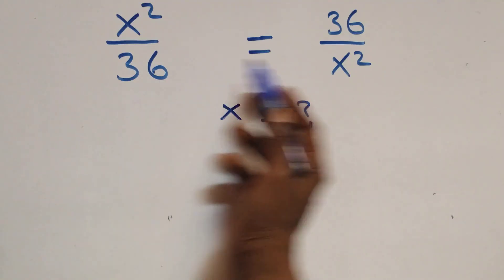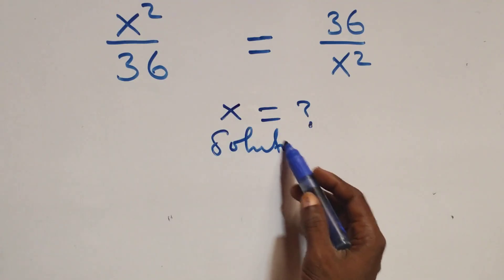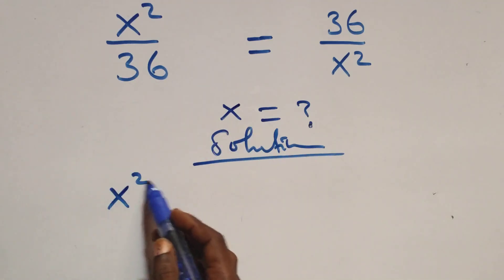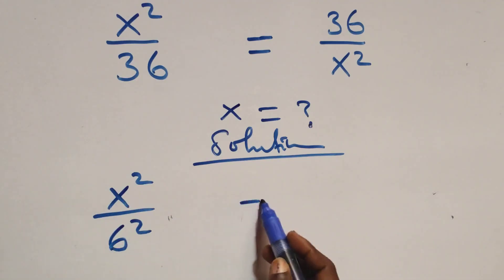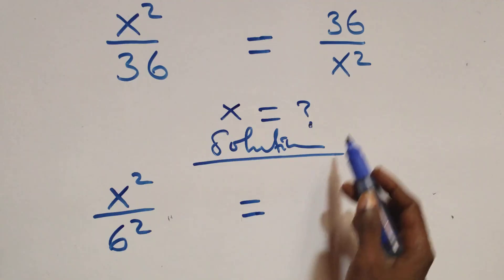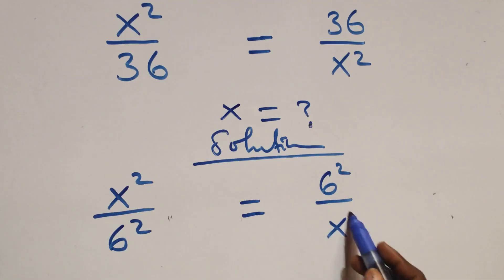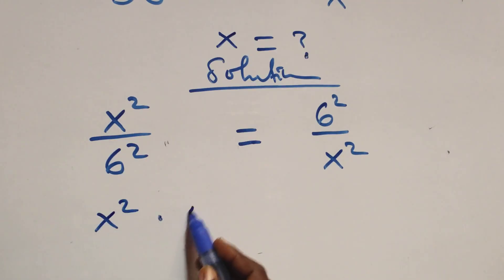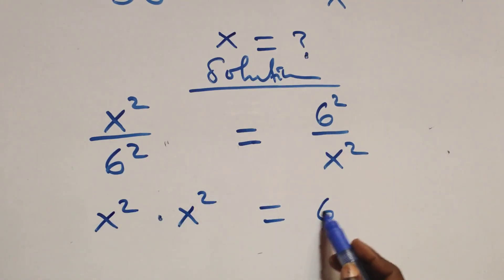Hello, you are welcome. Here is how to solve this nice exponential equation. We can write this as x² over 36 equals 36 over x², which we can also write as c² equals c² over x². Cross-multiplying gives x² times x² equals c² times c².